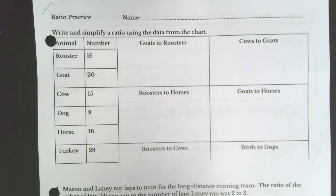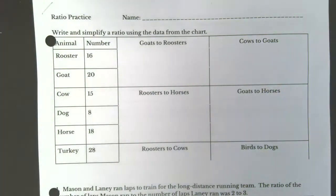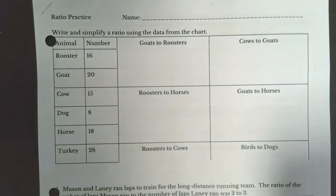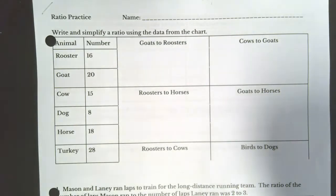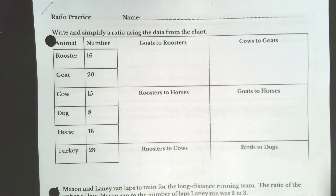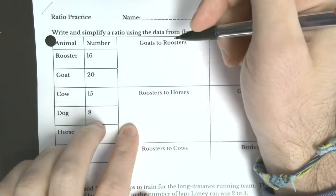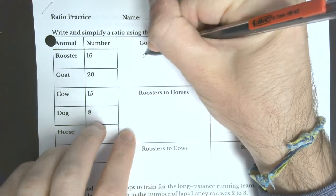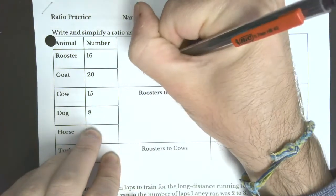I'll do a couple with you and then have you try some on your own. So we're going to be comparing amounts of animals on a farm, writing a ratio for each pair of animals and then simplifying it. For example, goats to roosters — I'm going to label that: goats on top, roosters on the bottom.